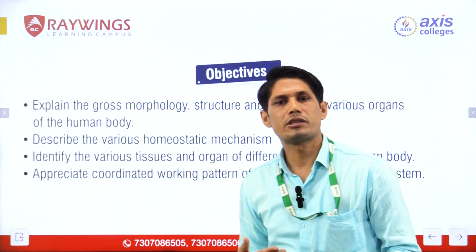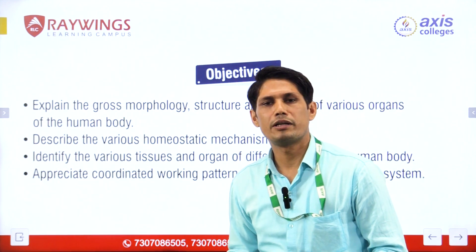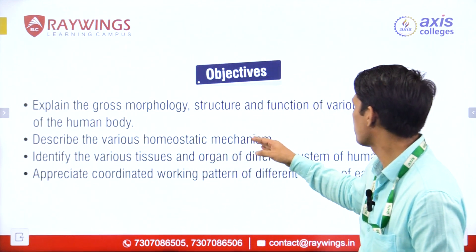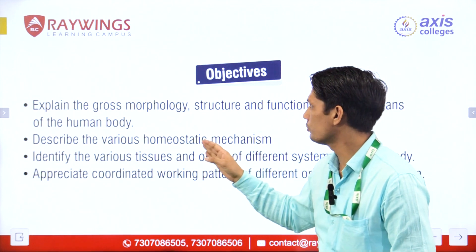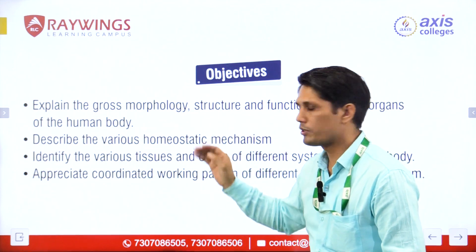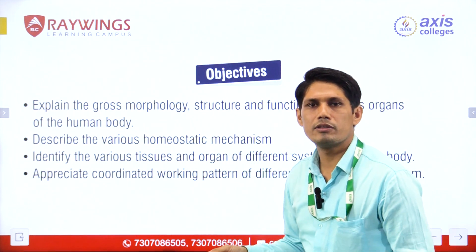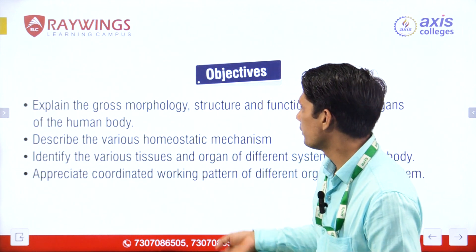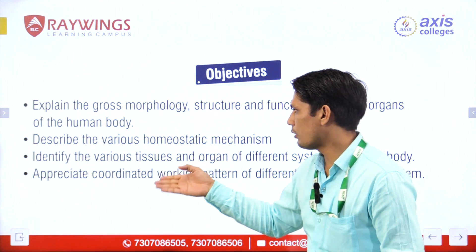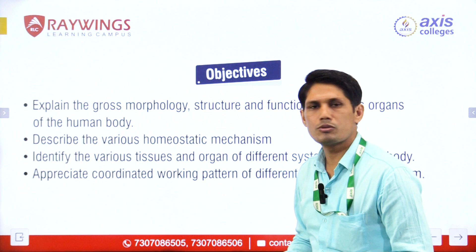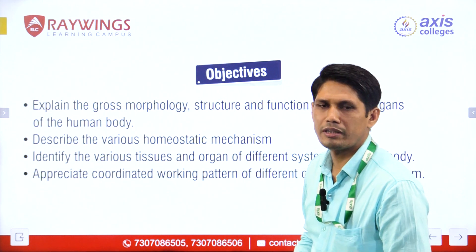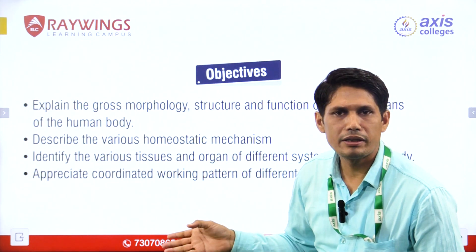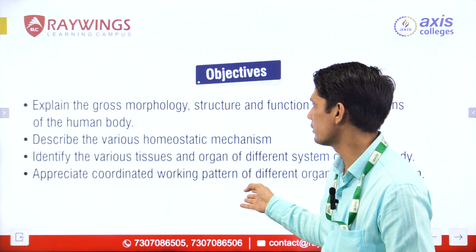What is the objective of human anatomy and physiology? The objective includes the relationship between the structure and functions of the various systems at cellular levels, tissue levels and organ levels. The second point is the various homeostatic mechanisms — positive feedback mechanism and negative feedback mechanism.